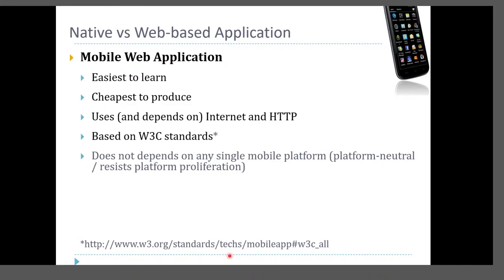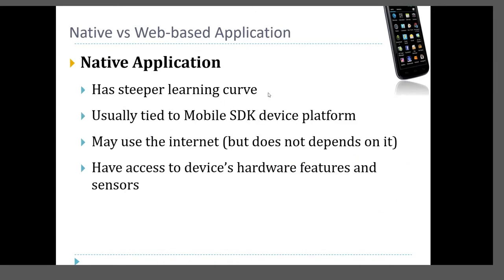One advantage of mobile web application is that it does not depend on any single mobile platform or operating system — it is platform-neutral and resists platform proliferation. This means you can almost always guarantee that a mobile web application can be executed on many platforms regardless of the operating system. A native application, on the other hand, depends on a mobile software development kit and device platform, may use the internet but does not depend on it, is tightly integrated with the device operating system, and has a steeper learning curve.